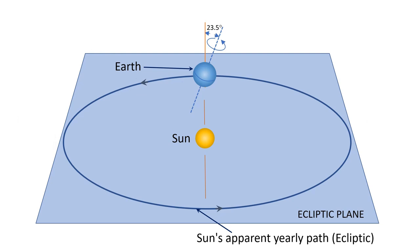Why do we call it the Sun's apparent path? We all know that it is the Earth that revolves around the Sun, but from the Earth it feels as if the Sun is moving along this path over the course of the year, and hence we call it the Sun's apparent path.